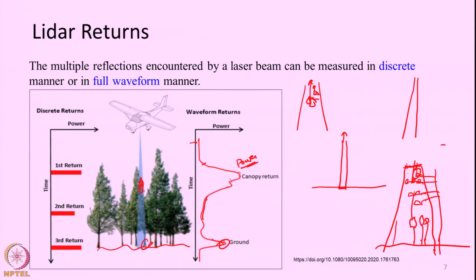The discrete system looks at certain high-power returns and stores them. If the system can store 3 returns, it will identify instants of high power return and store the power and time (range) at each: R1 from the first peak, R2 from the next, and R3 from the ground return. So for each laser pulse we will have multiple ranges measured along with their power or intensity. For that particular footprint x, y on the ground you will have 3 different points — one for the top of the tree, one for an intermediate layer, and one from the ground.